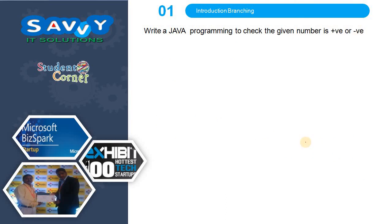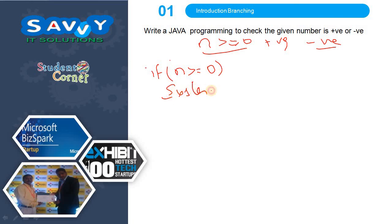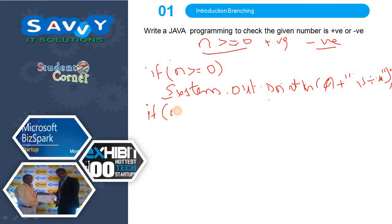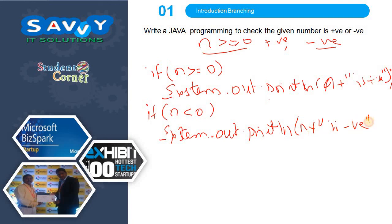The next program: check the given number is positive or not. If the number is greater than or equal to 0 it is positive, otherwise it is a negative number. So we check if n is greater than or equal to 0 and print n is positive. Again if n is less than 0, we print n is negative. In this way we use the simple if statement in these programs. Thank you.